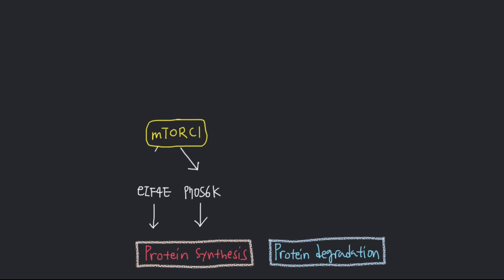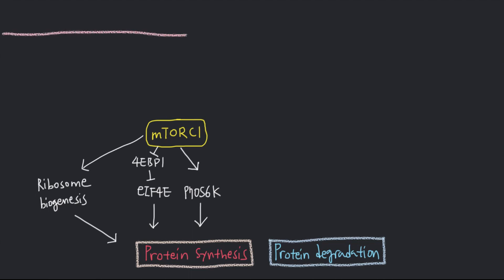mTOR complex 1 activates EIF4E by blocking its inhibitor, 4E binding protein, or 4EBP1. mTOR complex 1 also stimulates the production of ribosomes — the process called ribosomal biogenesis — thereby increasing translational capacity. So what activates mTOR complex 1?